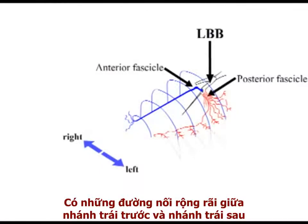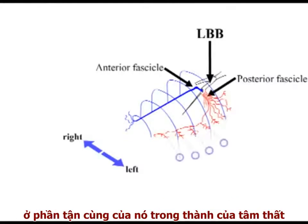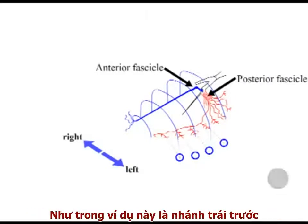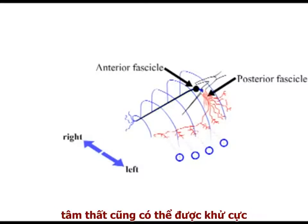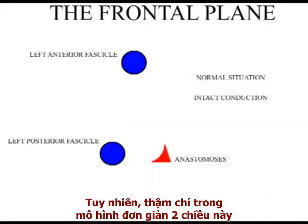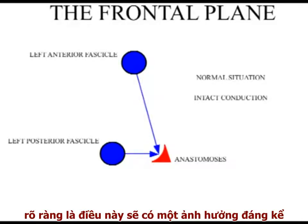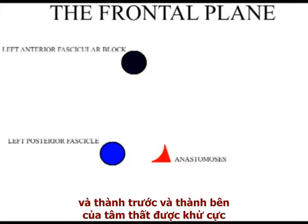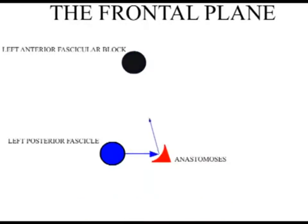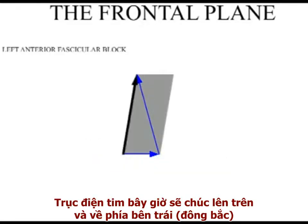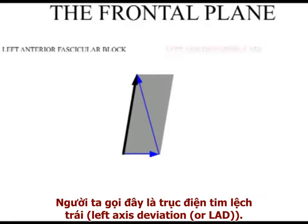There are extensive anastomoses between the anterior and posterior systems at their termination in the wall of the left ventricle. If one of these major branches is damaged and flow through it blocked — in the example shown here, the left anterior fascicle — the ventricle can be depolarized by retrograde flow of depolarization from the intact branch via these anastomoses. However, even in this simple 2D graphic, it is clear that this will have a dramatic effect on the direction of the frontal QRS vector. If disease blocks conduction in the anterior fascicle and the lateral and anterior ventricular walls are depolarized by current flowing upwards from the anastomoses in the left ventricular wall, the cardiac axis is now traveling upwards and to the left. This is termed left axis deviation.